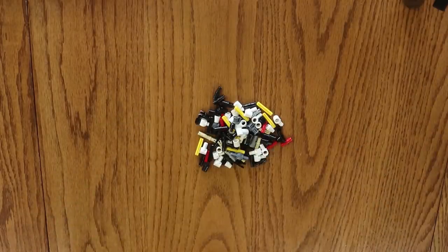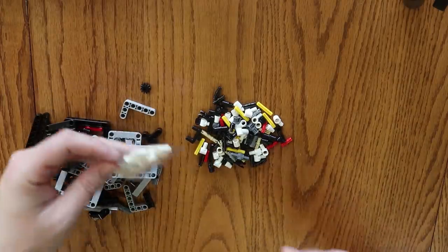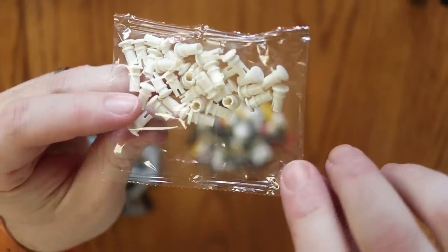I dumped out the parts to start building. One bag entirely contained a new interesting element for holding the fish skin onto the model. It's essentially a half-technic pin with a head on it.